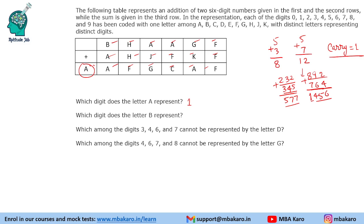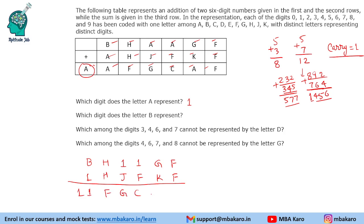If one knew that principle they could have answered the first question immediately. Now we substitute 1 where appropriate. We have the two six-digit numbers and their sum laid out with letters B, H, H, 1, 1, G, F and 1, H, J, F, K, F summing to 1, 1, F, G, C, 1, F. Looking at the leading column: B plus 1 equals 11. B plus 1 being 11 would mean B is 10, but B is a single digit. The only other possibility is that there is a carry from the next column, in which case B equals 9. So B is 9.